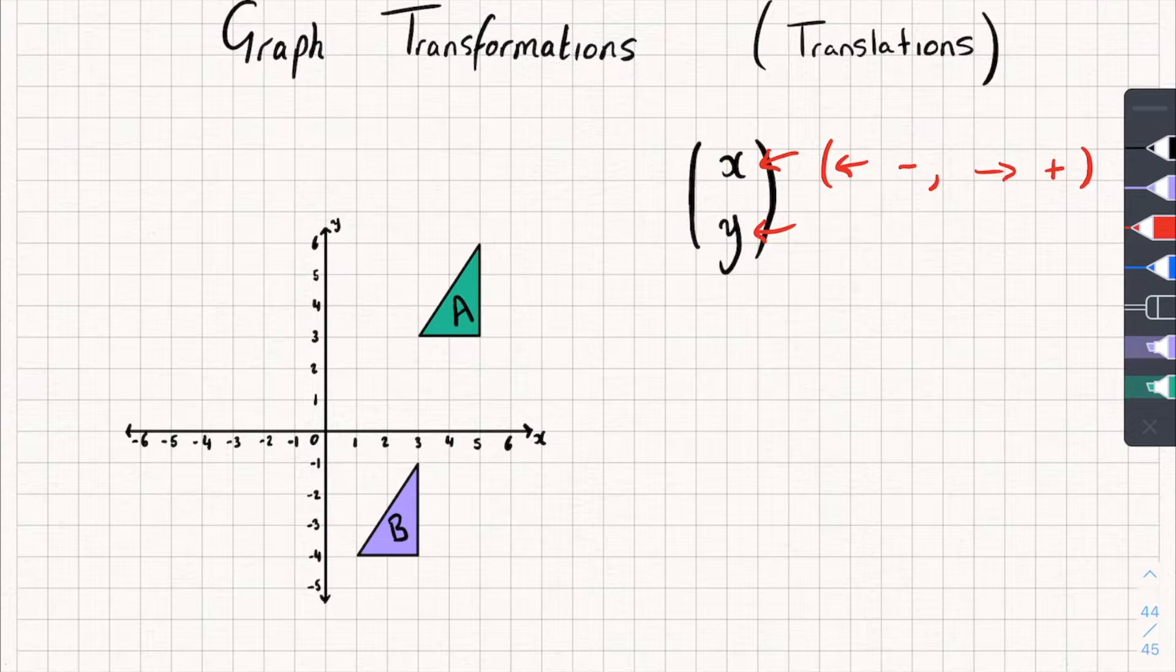This bottom number here, this y, tells us how far up or down the shape has moved. So if it's moved up by two squares, then we write just positive two. So if it's moved upwards, it's a positive.